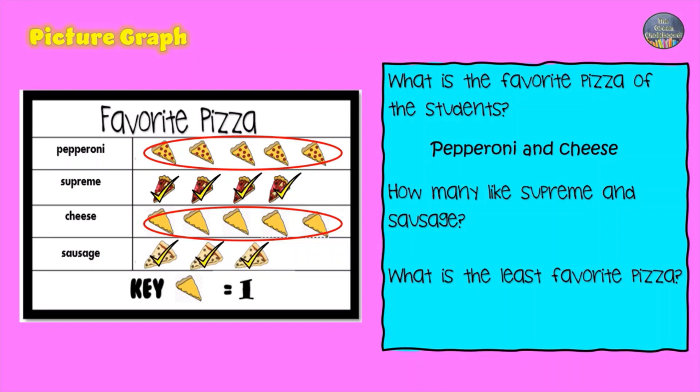Four plus three is seven. What is the least favorite pizza? Only three students like sausage — this is the least favorite pizza.